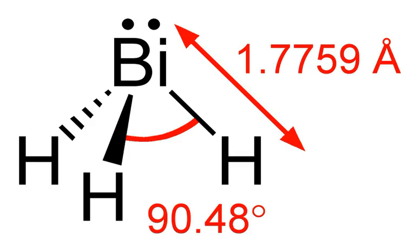The term bismuthine may also refer to a member of the family of organobismuth compounds, species having the general formula BiR₃, where R is an organic substituent. For example, Bi(CH₃)₃ is trimethylbismuthine.